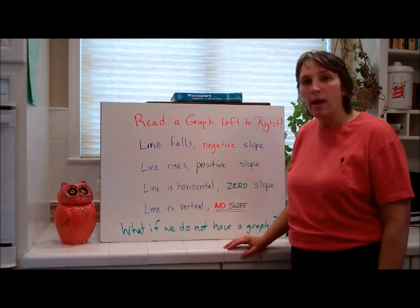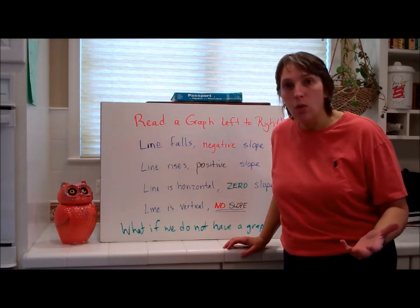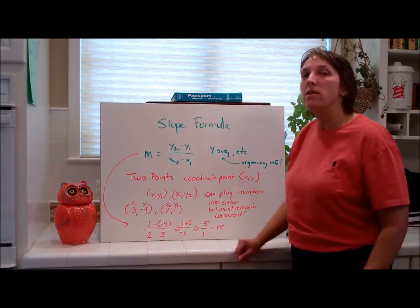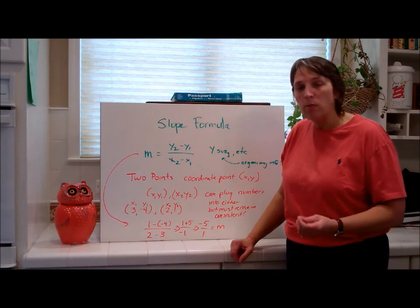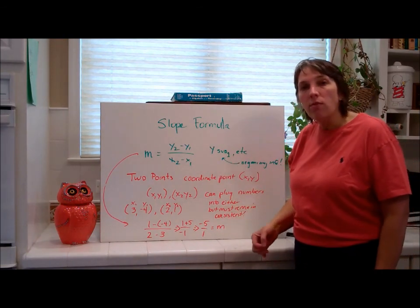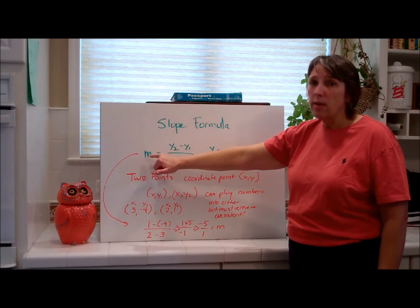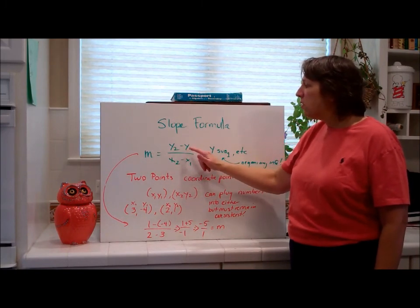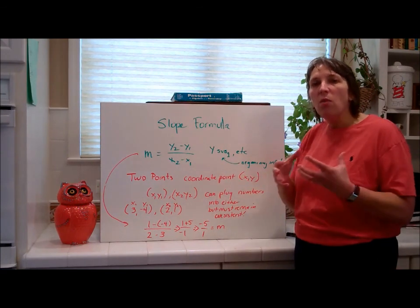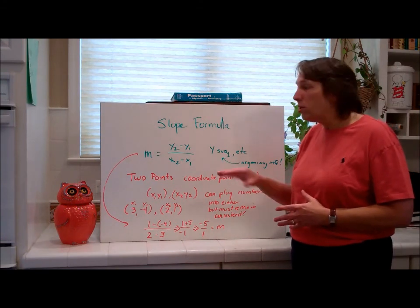And what if we do not have a graph to look at so that we can identify two points on the line and draw a right triangle, and we don't have the ability to draw a quick sketch of a graph? Well, that takes us to slope formula. You will need to memorize this. And yes, every time you do a slope, finding the slope problem, you must identify this. You can't write it at the top of the page one time and say, well, that's my formula. For now, you have to write it every single time for every problem. And that says that m, and again, notice we're using a lowercase m because that's identifying that we're looking for the slope of a line.